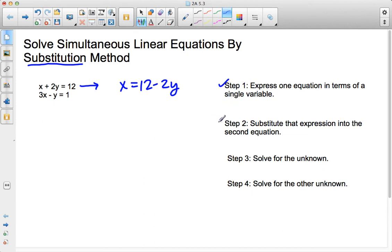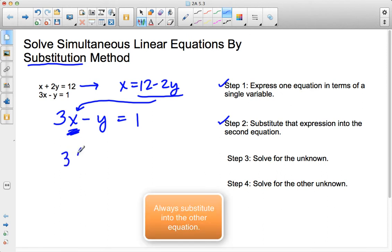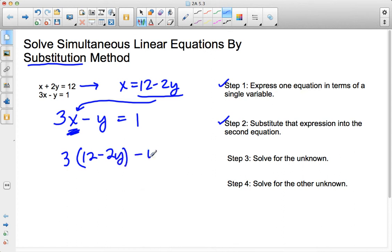Then step two is I'm going to substitute that expression into the second equation. So, everywhere I see x in the second equation, 3x minus y equals 1, what I'm going to do is replace this x with this part of the equation because it is now in terms of y. So, it's going to be 3 times, in parentheses, 12 minus 2y minus y equals 1.